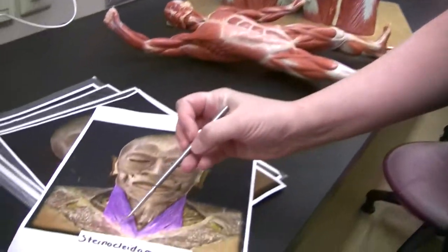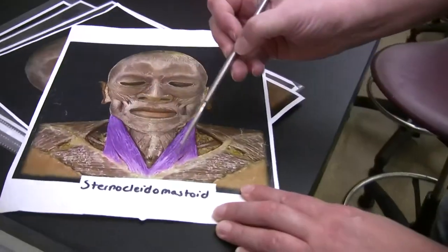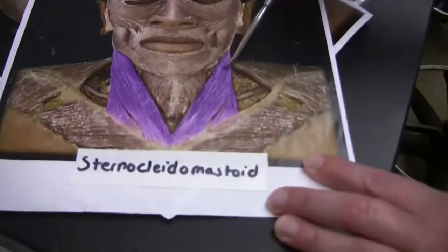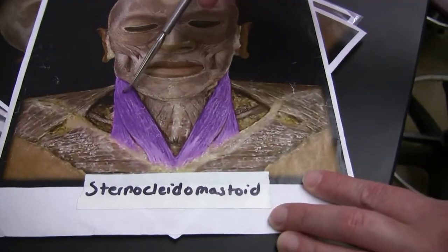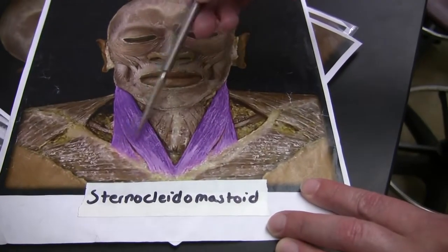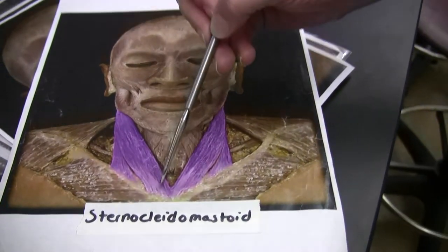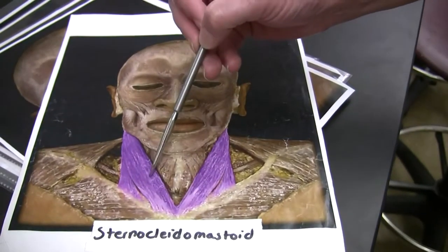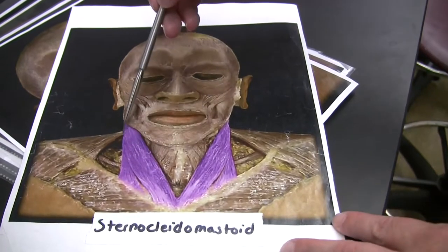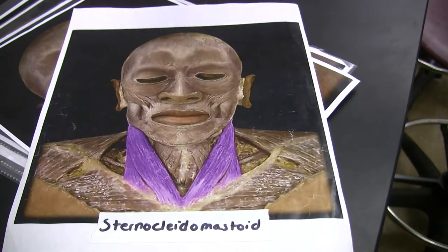We're going to start with the sternocleidomastoid. This is the muscle that runs up the side of the neck. It's got two heads because it originates on both the sternum and the clavicle, and then it goes up to the temporal bone.